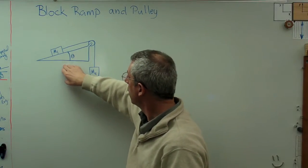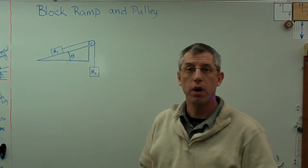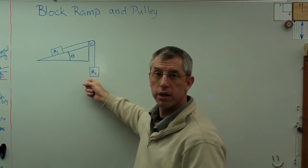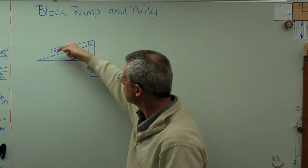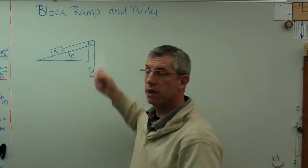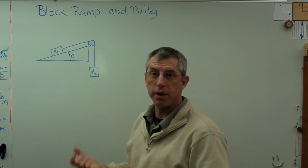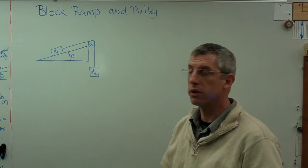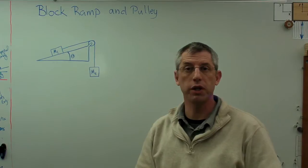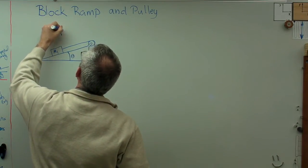I've got a ramp here and we've got two blocks connected by a rope over a pulley. The second block is hanging under the force of gravity and the first block is on the ramp, so it wants to slide down the ramp but there's a rope pulling it potentially up the ramp. What's actually going to happen depends on the relative masses of the two blocks, the angle of the ramp, and the coefficient of friction.